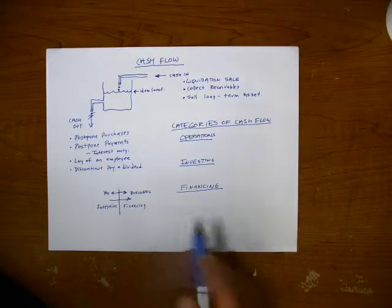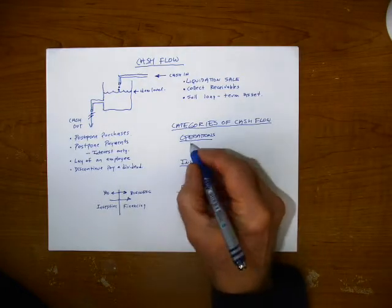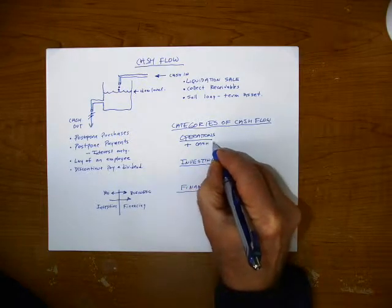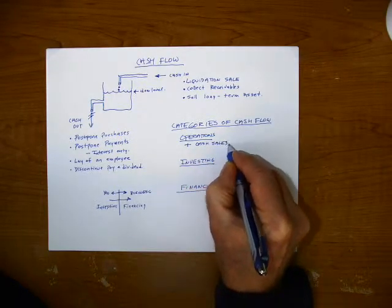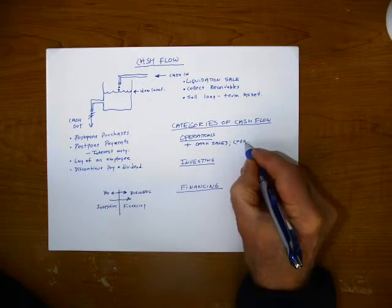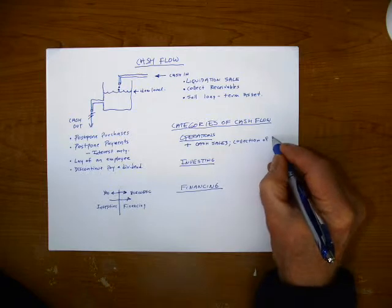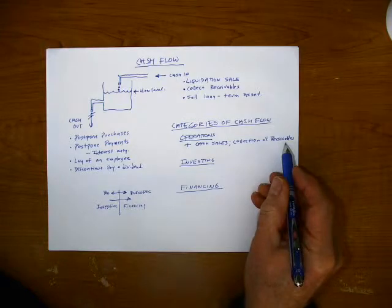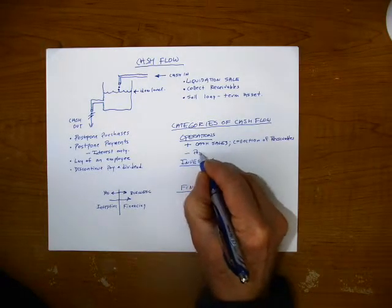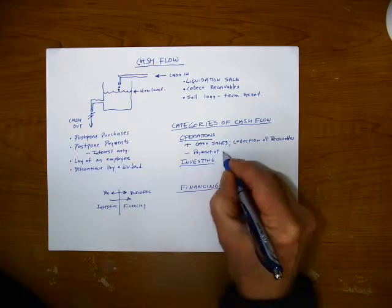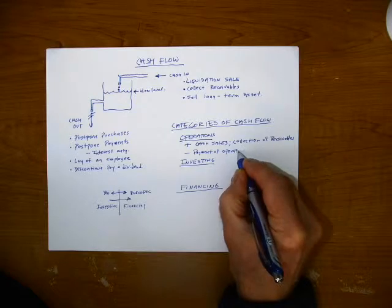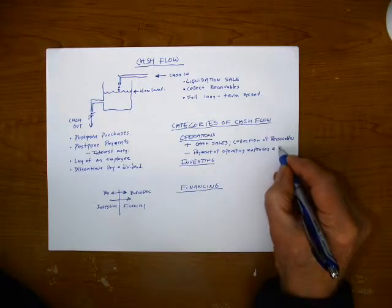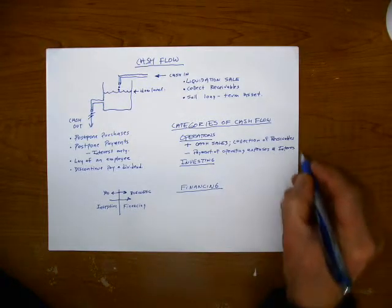So let's talk about operations here first. Operations, cash flow, cash sales, collection of receivables. Cash sales and collection of receivables brings cash in. Payment of operating expenses and interest represent cash out under operations.